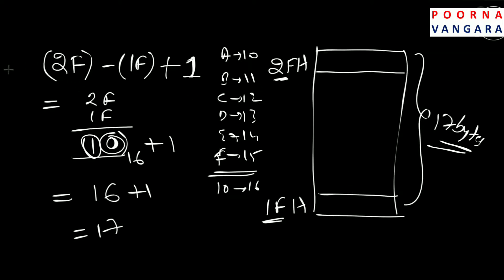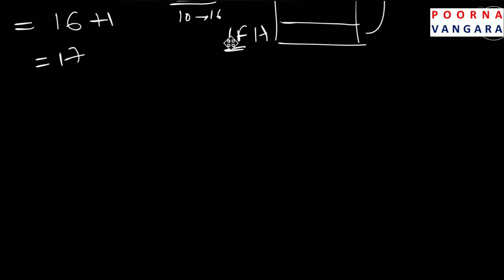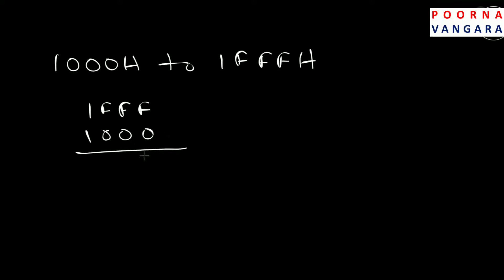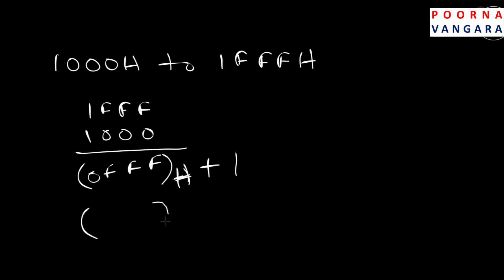In the same way, if any range is given you can calculate the memory size. Let us consider a bigger range: starting address 1000h and ending address 1FFFh. What is the total size? Simply compute 1FFF minus 1000, which gives FFFh. To this result you need to add 1. Since the result is in hexadecimal, convert to decimal first before adding 1.